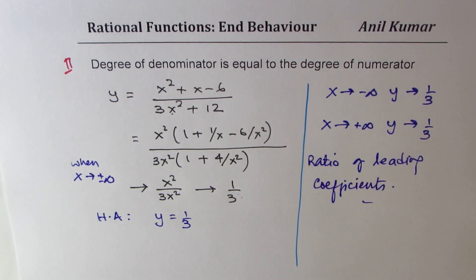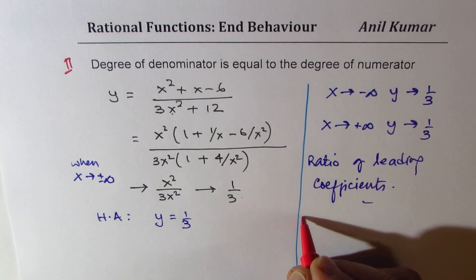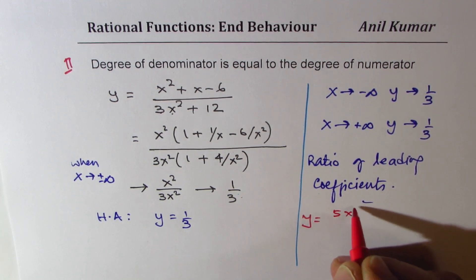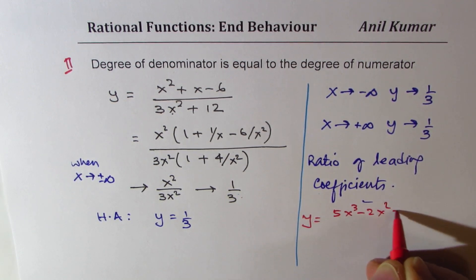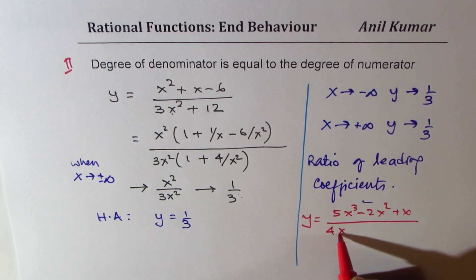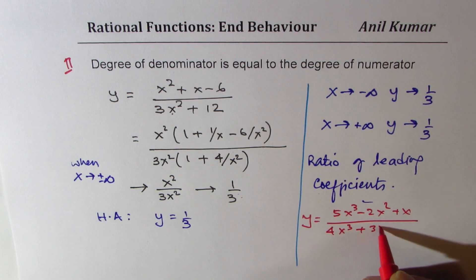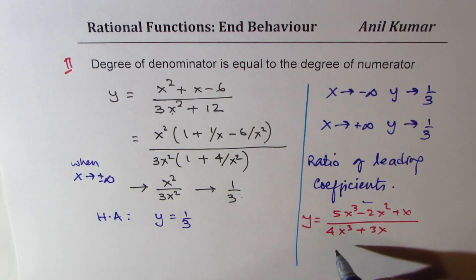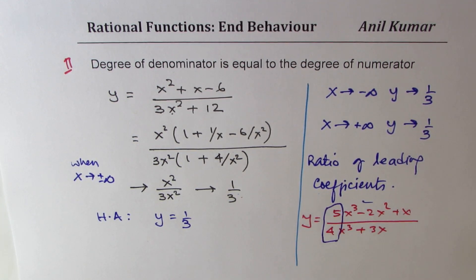As a practice question for Case 2, find the end behavior of y = (5x³ − 2x² + x)/(4x³ + 3x). You will find that the answer is 5/4, the ratio of the leading coefficients.